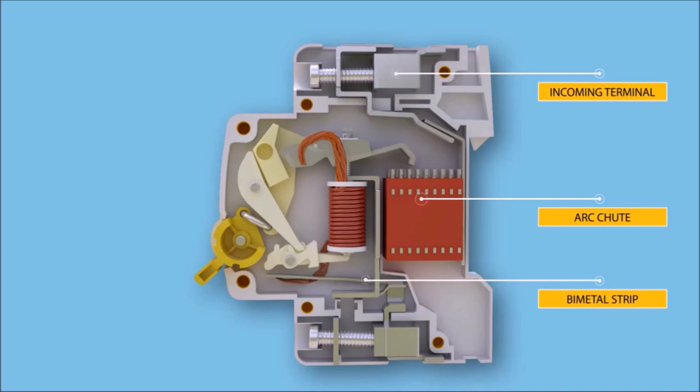The bimetallic strip is part of the thermal tripping arrangement, around which a heater coil is wound to create heat depending on the flow of current.